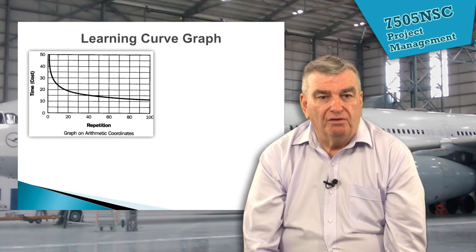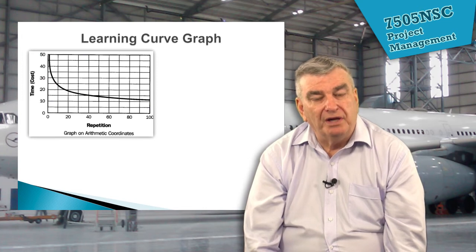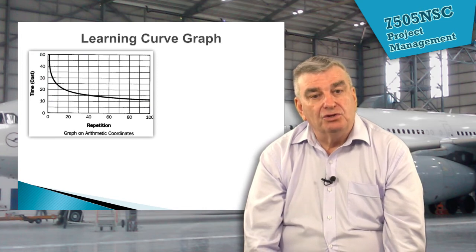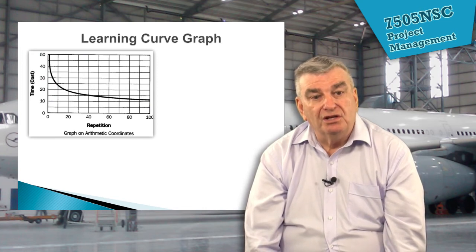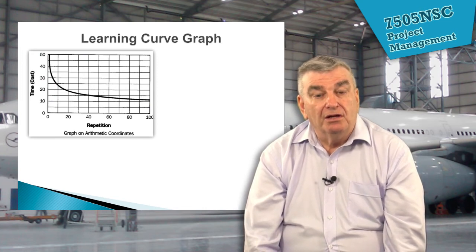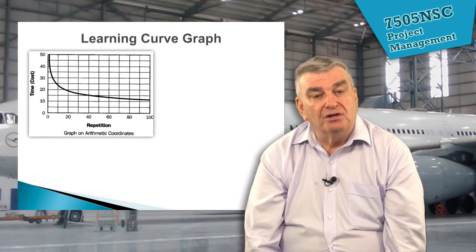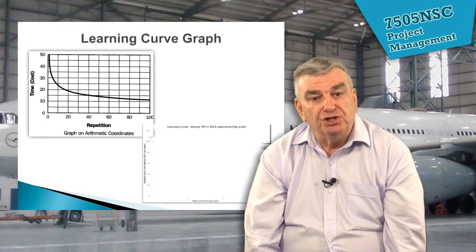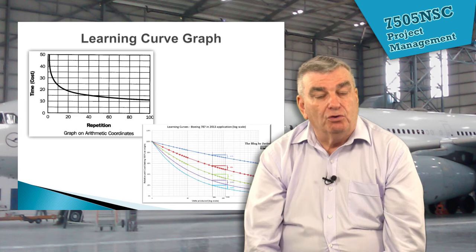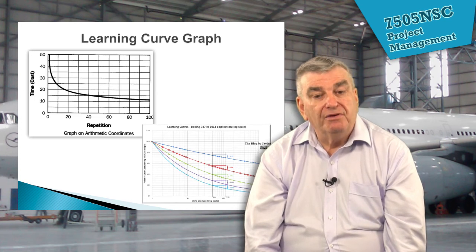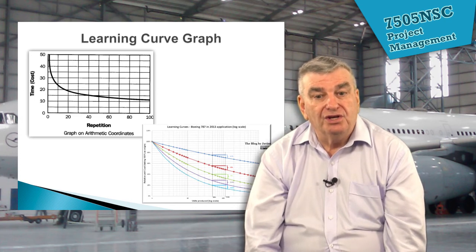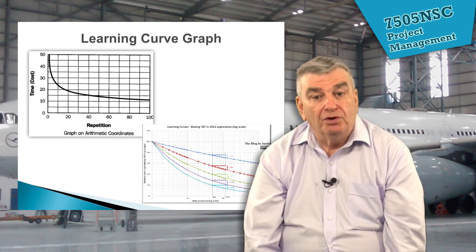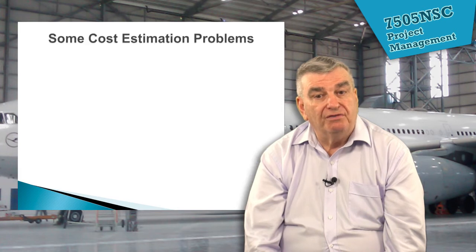We'll take a look at the learning curve graph. This graph simply says that the more times we repeat a certain activity, the more we learn and the more efficient we become. We can see this learning curve applied in a real-world case with the Boeing 787.